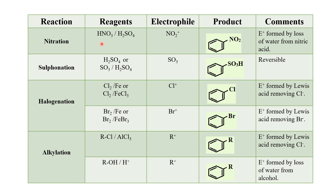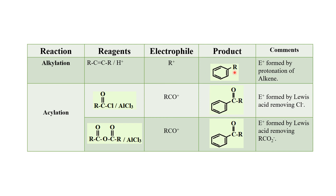Electrophilic substitution reactions की summary: Nitration - reagents nitric acid और sulfuric acid, electrophile nitronium ion, product nitrobenzene। Sulfonation - product benzene sulfonic acid। Halogenation - product halobenzene। Alkylation - product alkyl benzene (reagents में alkynes, alcohols, और alkyl halides भी use हो सकती हैं)। Acylation - reagents acid anhydride या acid chloride, product acyl benzene।